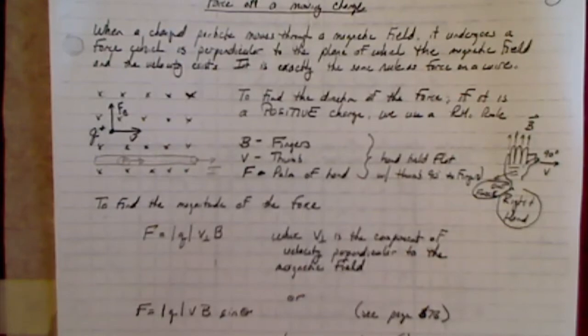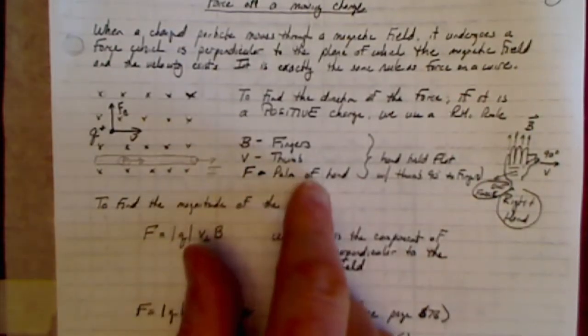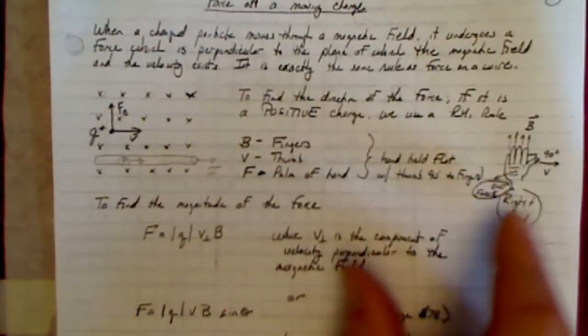My thumb represents the velocity of the charged particle, just like thumb represented current before. And the force is going to be perpendicular to the palm of your hand.